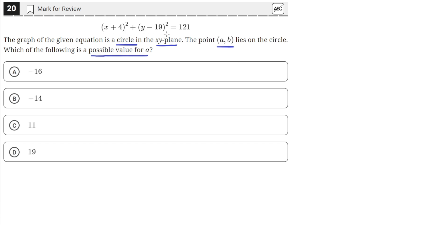We have this equation for a circle, and we need to find out which of these can be a possible value for a, which is the x-coordinate for coordinates on the circle.